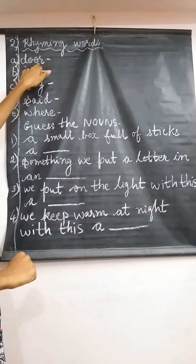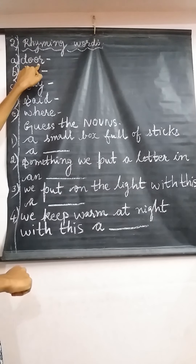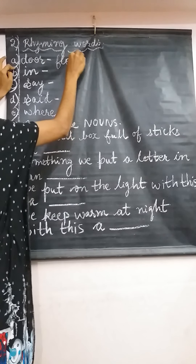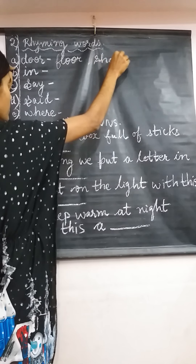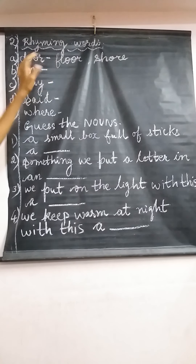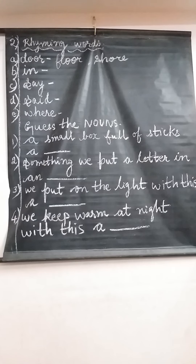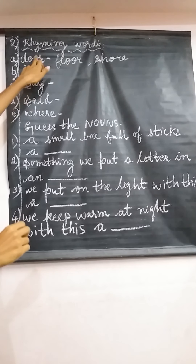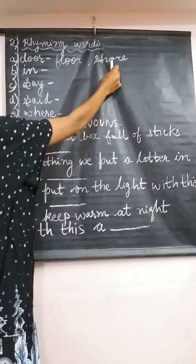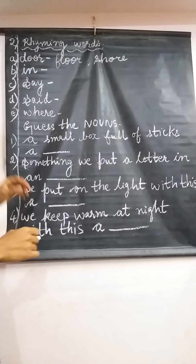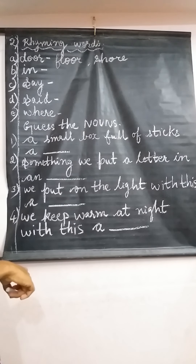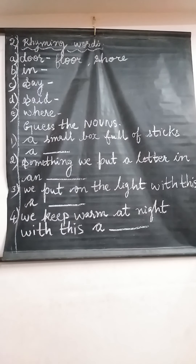For example, we have the word 'door'. How many rhyming words can we write for door? We can write 'floor' and 'shore'. You can observe that 'floor' has the actual same sound as door, and 'shore' — S-H-O-R-E — has a similar sound. We say door, shore. So both are rhyming words. We can also add more such words.